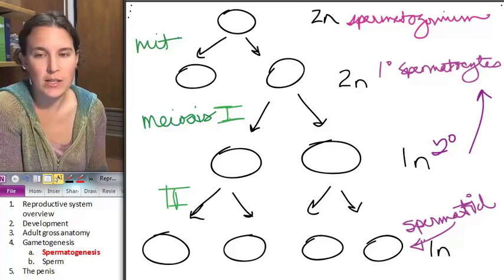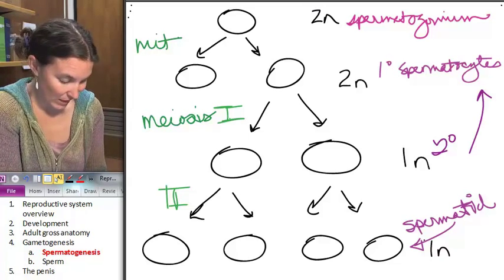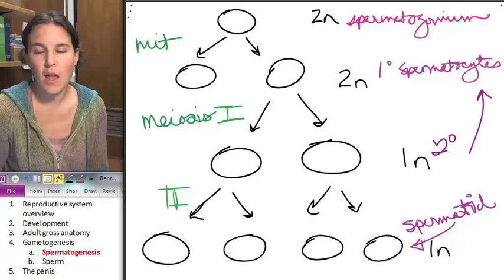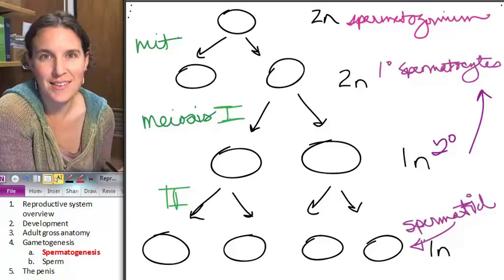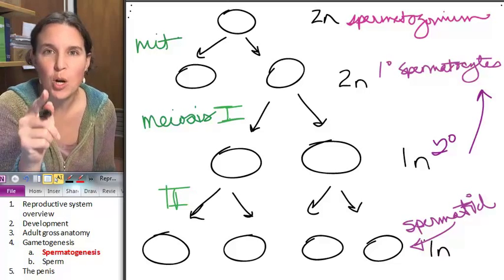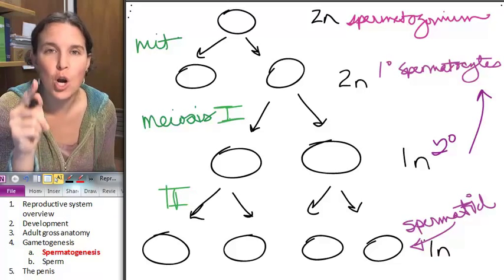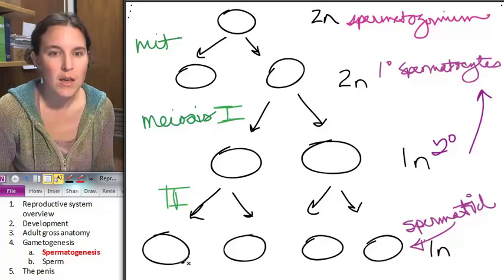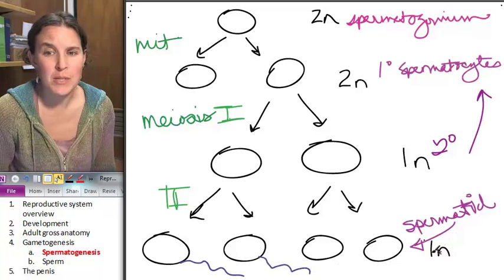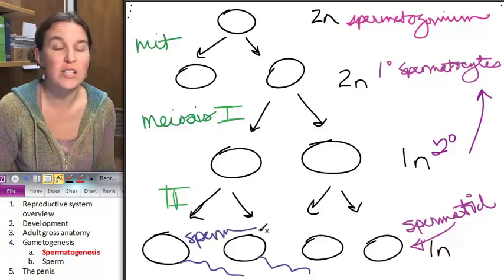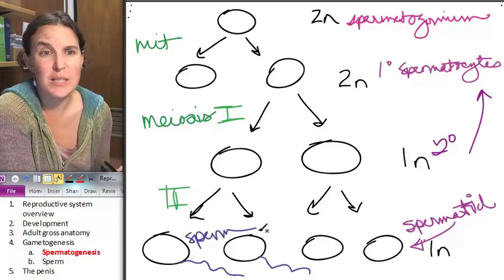Yeah, they're not sperm yet. They're not sperm until they graduate and get wet. You are not a sperm. You are not a true sperm until you earn your tail. Where's my pen so I can draw a tail? That's a spermatid. These guys have earned their tails. They are sperm, also known as spermatozoa.